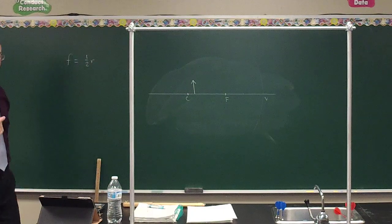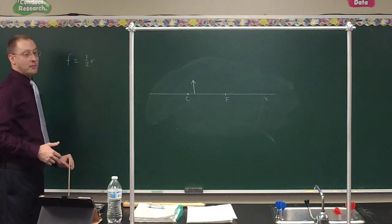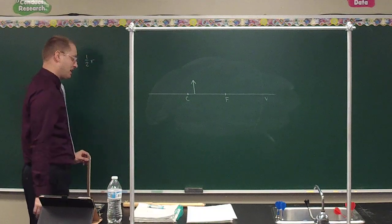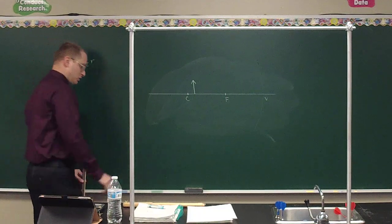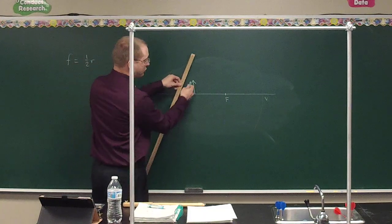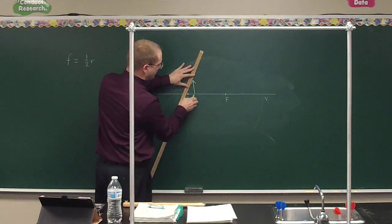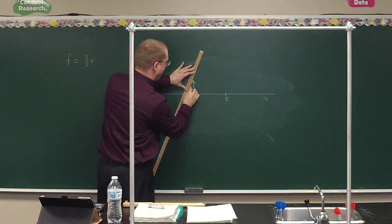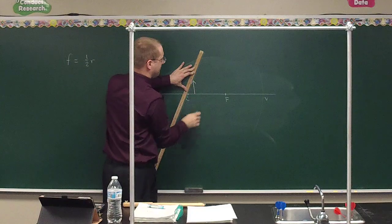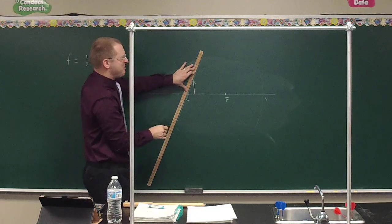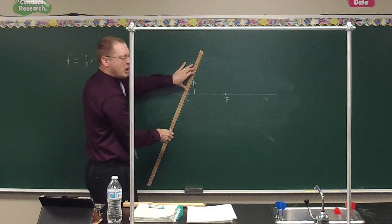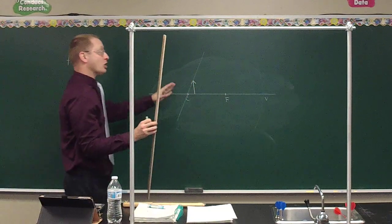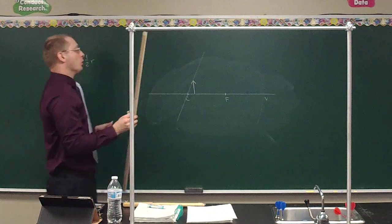Let's do one more ray diagram together. Michael goes first this time with the central ray. But remember, the center is way back there — so when we draw the central ray, does it hit the mirror? No. So for this situation, because the object is placed where it won't hit the mirror for the central ray, we'll ignore the central ray. We have three principal rays and need at least two.